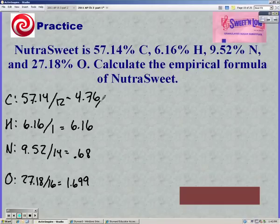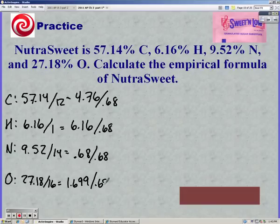Divide by smallest, which in this case was 0.68. And that gives us 7, 9, 1, and 2.5.